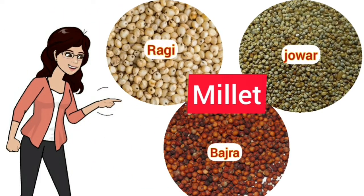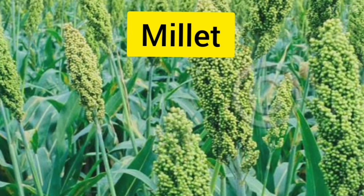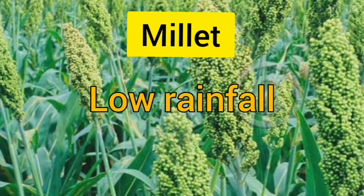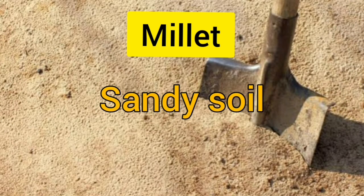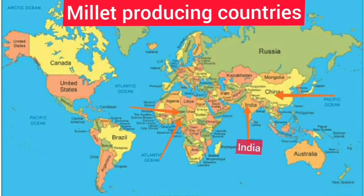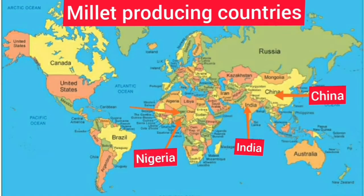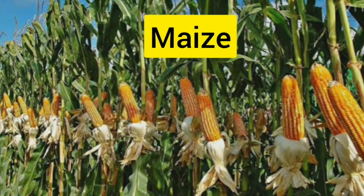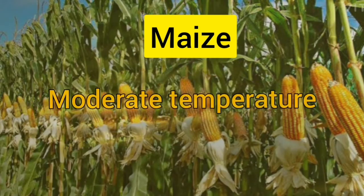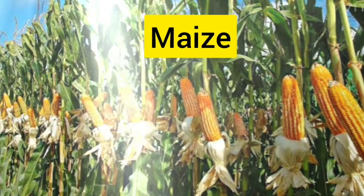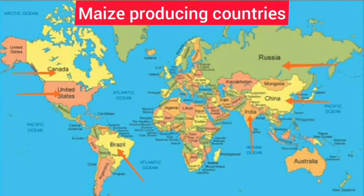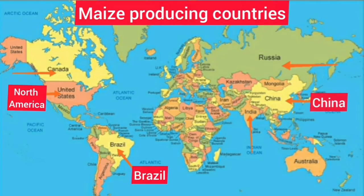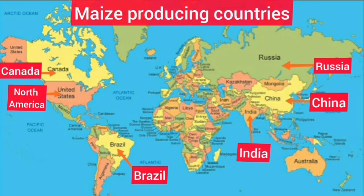Coarse grains like jowar, bajra, and ragi are called millet. It is a hardy crop that needs low rainfall and high to moderate temperatures, and can be grown on less fertile and sandy soil. The main millet-producing countries are India, China, Nigeria, and Niger. Maize requires moderate temperature, rainfall, and lots of sunshine, and needs well-drained fertile soil. It is mainly grown in North America, Brazil, China, Russia, Canada, and India.